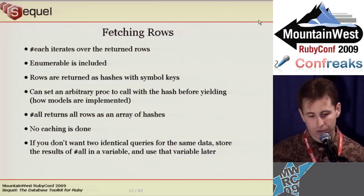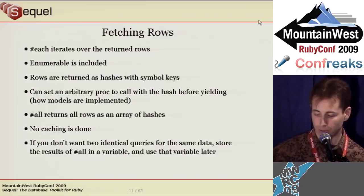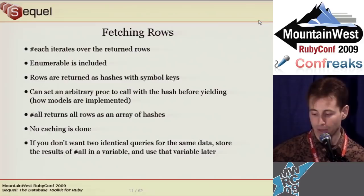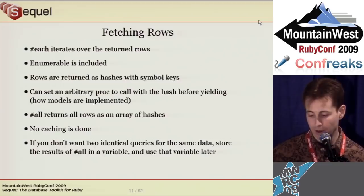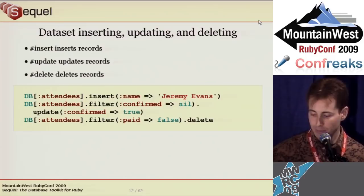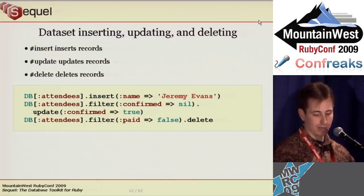To request records, you use each or all. Each yields records as they arrive; all loads all records first. Some adapters buffer all rows in memory, but with others, each works on a million-record dataset without loading everything into memory. You can set an arbitrary proc called the row_proc to call with each row before yielding — that's how model instances are returned by datasets. Datasets do no caching; calling each twice sends two queries. Inserting, updating, and deleting should be intuitive — be careful with delete and update as they affect all rows in the receiver.